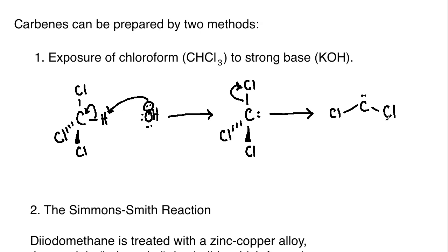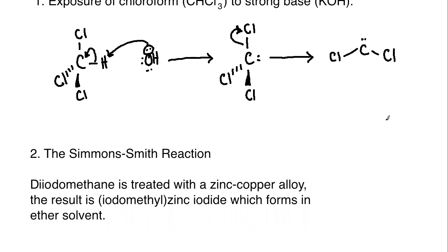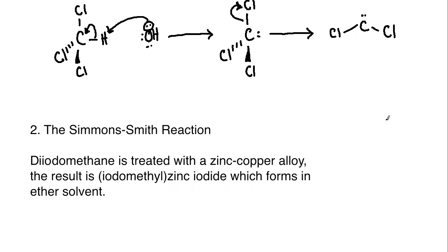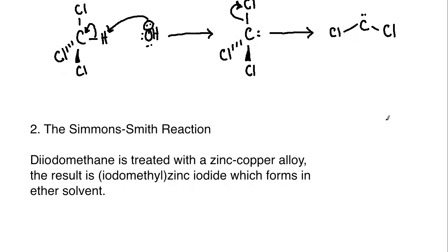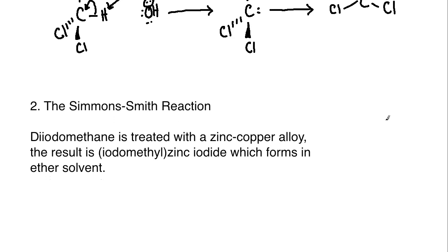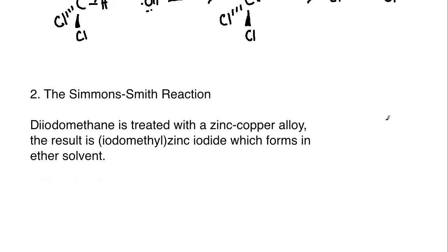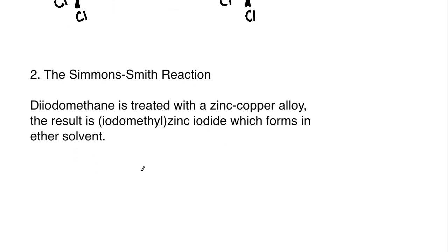The second way that we can go about doing this is something called the Simmons-Smith reaction. And in this reaction, it's going to be a little bit different than what we saw above. This is going to use diiodomethane. So, it'll be a CH2 that's going to have two iodines on it. And that's going to be treated with a zinc copper alloy. And the result will be iodomethyl zinc iodide. And this is typically formed in ether. That is the solvent of choice when we end up doing this. So, what you end up with is the iodine, you have the CH2, and then you get right in between here the zinc and the iodine.